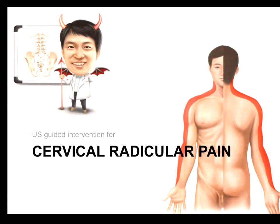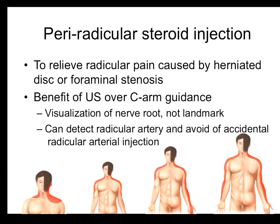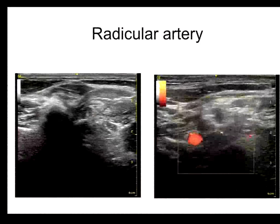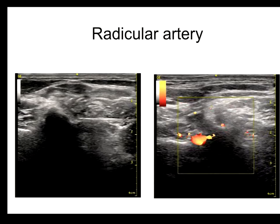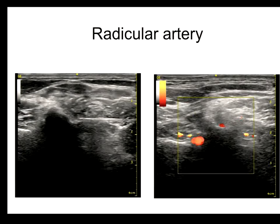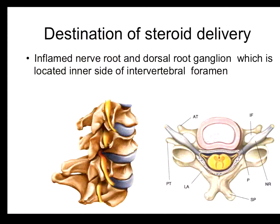Next I'll talk about cervical radicular pain and ultrasound-guided perineural steroid injection. The main benefit of ultrasound is to detect the nerve and radicular artery. You can see pulsation of the radicular artery on B-mode and color Doppler, allowing you to identify the radicular artery and avoid dangerous injection. The final destination of steroid injection is the inflamed nerve and dorsal root ganglion, located in the lateral aspect of the transverse foramen.